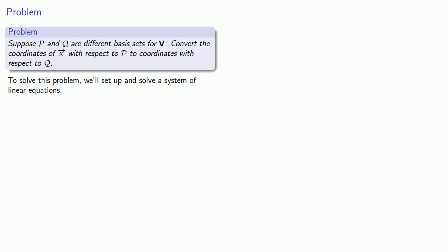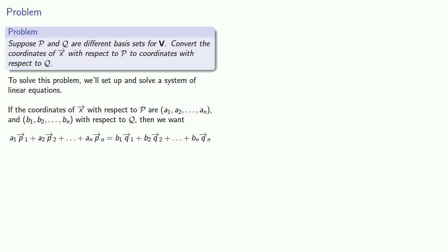If the coordinates of x with respect to P are a1 through an and b1 through bn with respect to Q, then because they are supposed to be coordinates for the same point, I know that the linear combination with the coefficients a1 through an has to be equal to the linear combination b1 through bn. We can view this in matrix form.